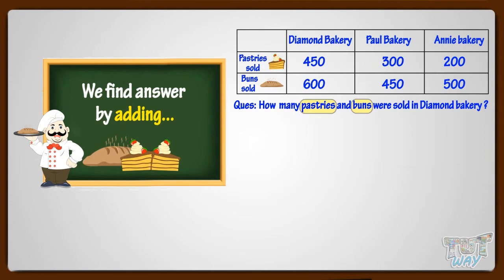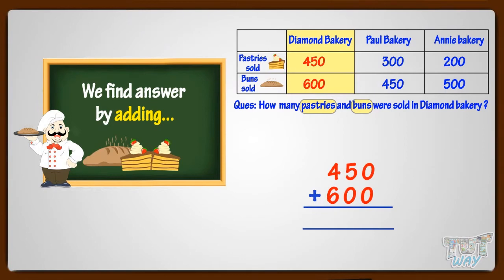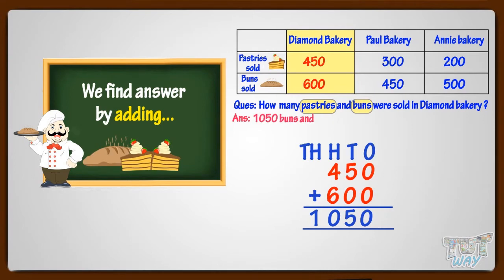So we have to add the number of pastries and buns of Diamond Bakery. We will add the pastries and buns sold by Diamond Bakery. First of all, write all numbers in order to add them — write each numeral below the mark of its place value. By adding the numbers, we got 1,050. So, 1,050 buns and pastries were sold by Diamond Bakery.